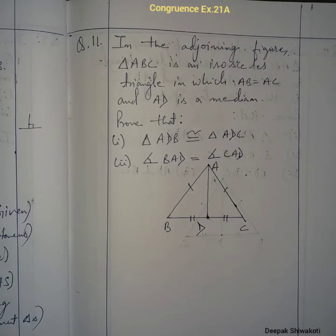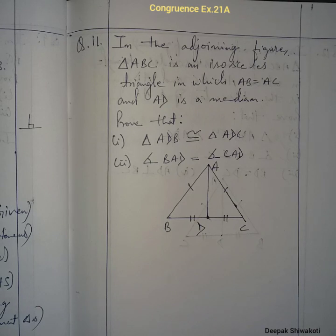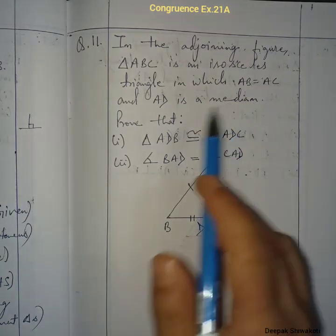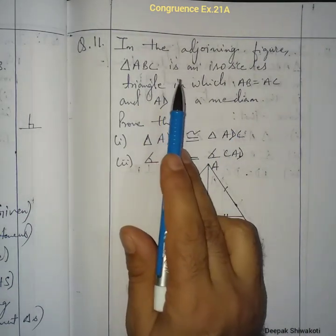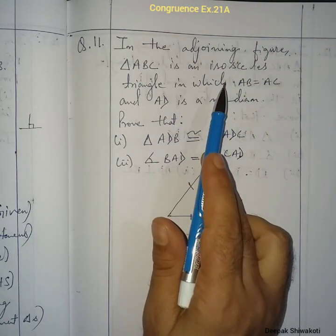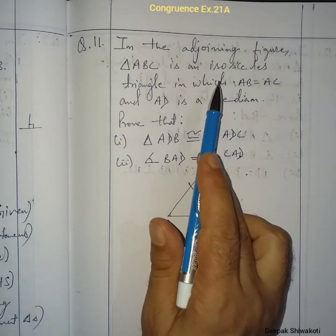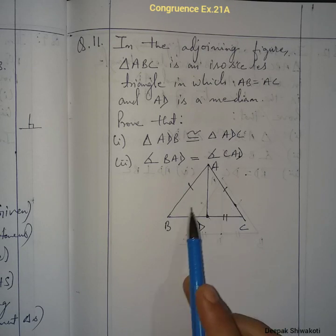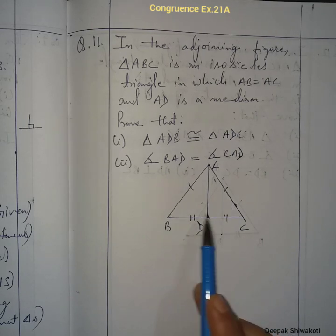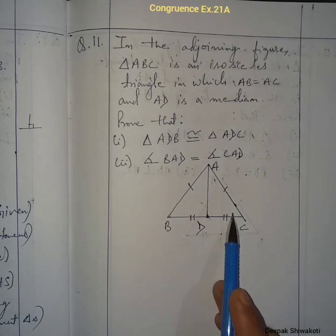Welcome to Class 7 Mathematics. We are in Congruency, Exercise 21A, Question number 11. In the adjoining figure, triangle ABC is an isosceles triangle. When we say isosceles triangle, the opposite sides are equal and the opposite angles are also equal.